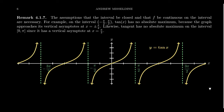The assumptions of the Extreme Value Theorem are important. If we relax any of the assumptions, the statement could be false. Why does a closed interval matter? Let's consider the standard tangent function y = tan(x) on the open interval from negative π/2 to π/2 to see what goes wrong.